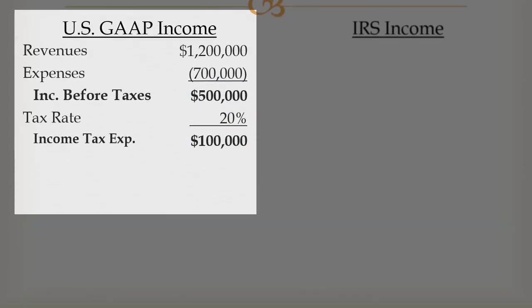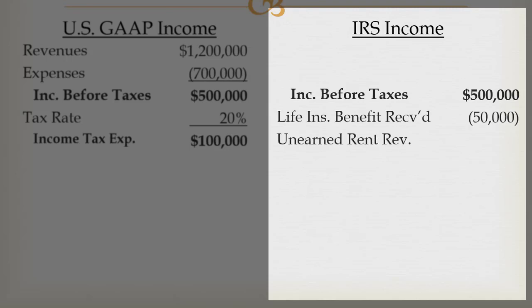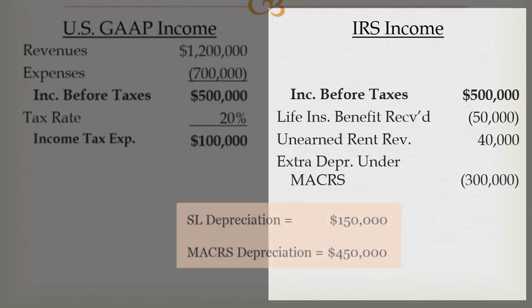But then we talk to our tax department, and they say your income before taxes is $500,000, but you have a life insurance benefit that you received and we don't have to pay taxes on life insurance, so we're going to take that out. They also find some unearned rent revenue — it's unearned for GAAP, but we've got the money so we have to pay taxes on it, and they add that back in. Then they look at depreciation and say you showed straight-line, but under MACRS we get a much bigger deduction, so we take out $300,000 above and beyond your existing depreciation expense.